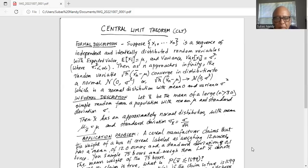Simple random sample from a population with mean mu and standard deviation sigma. Then x bar has approximately normal distribution with mean mu x bar equal to mu.